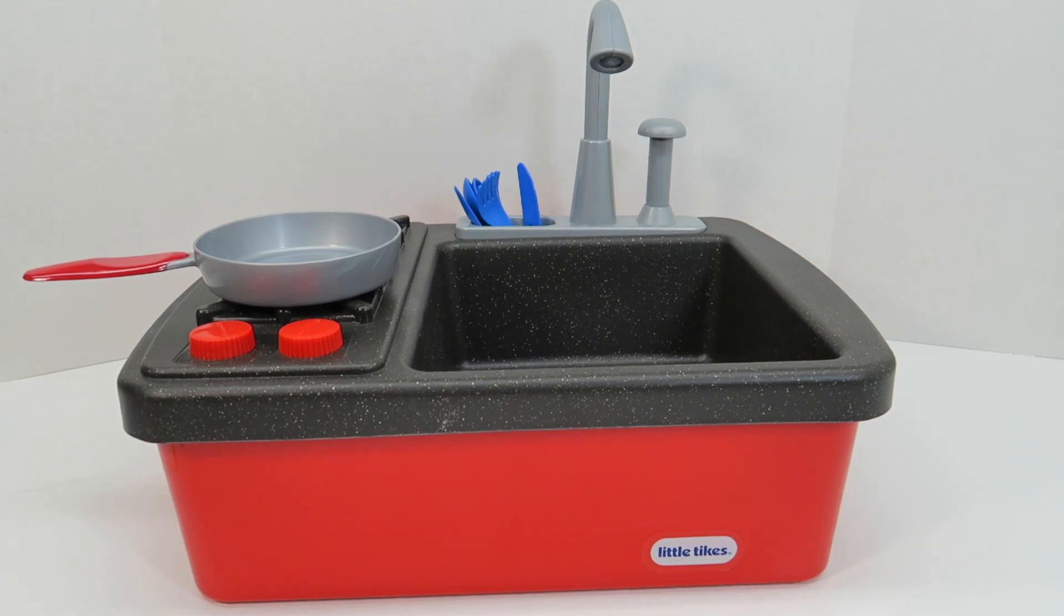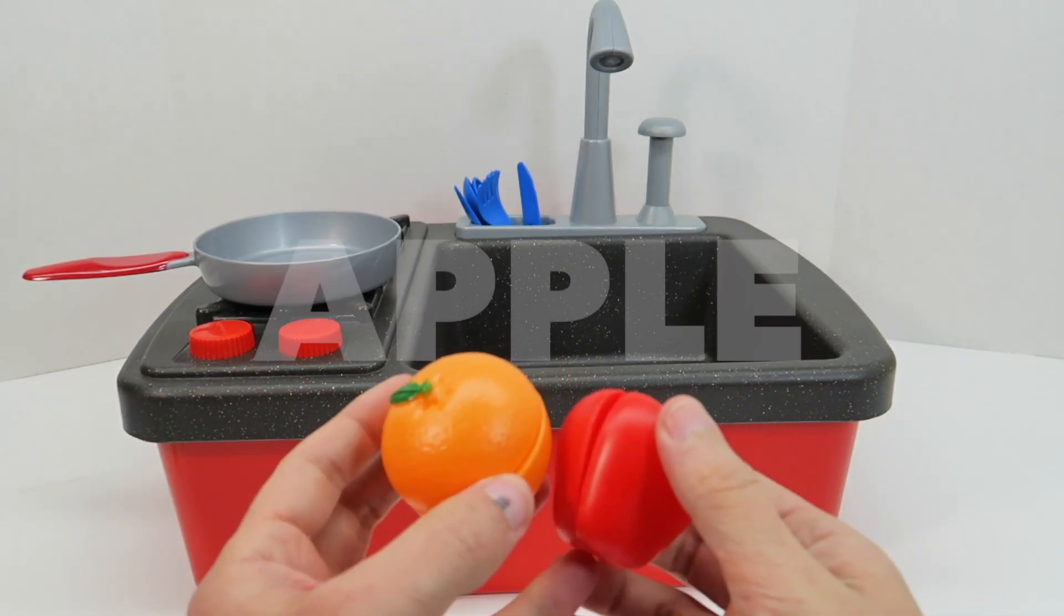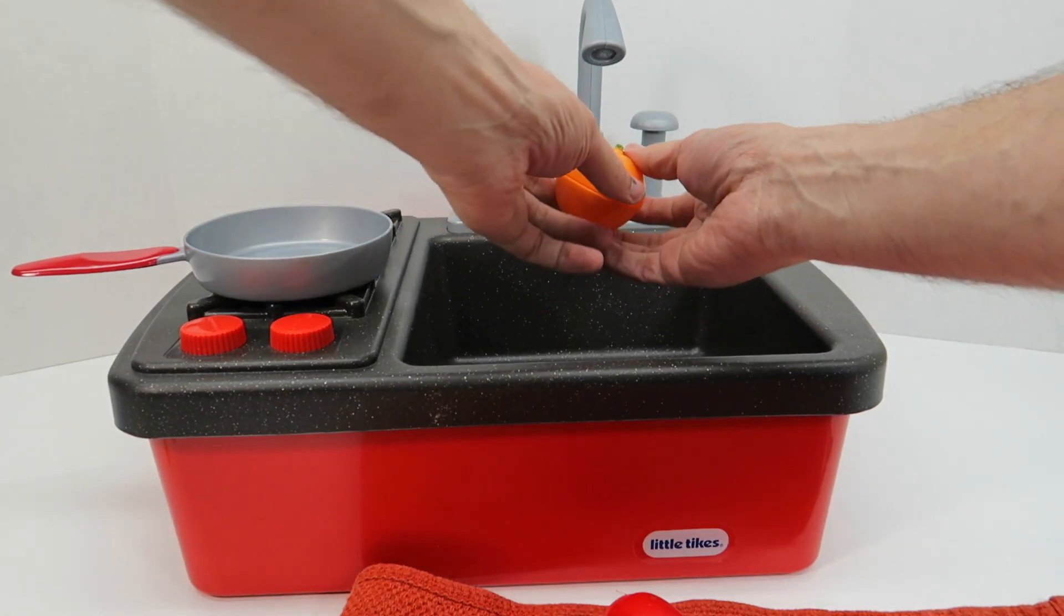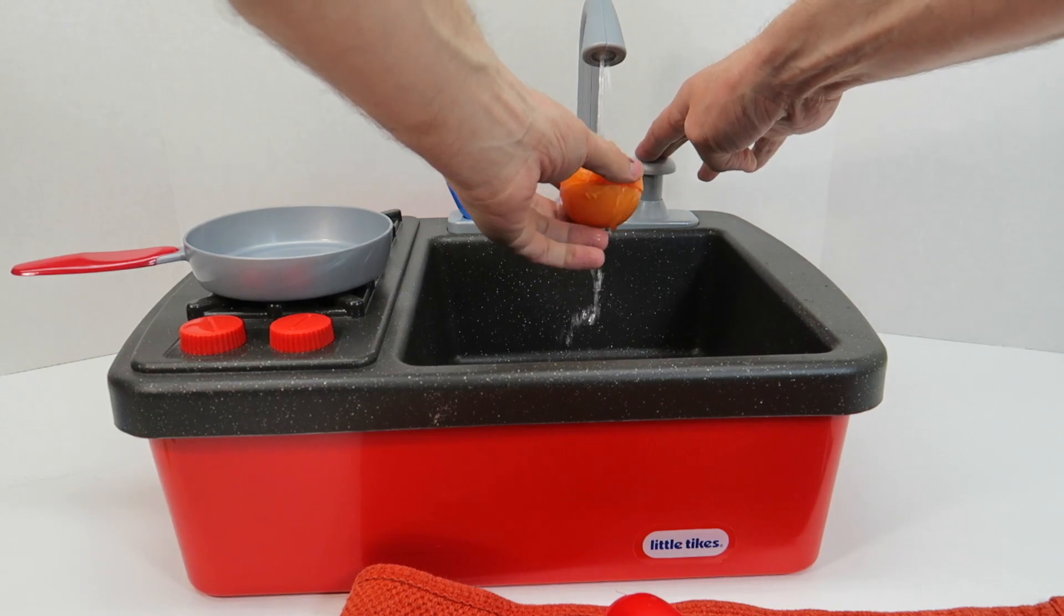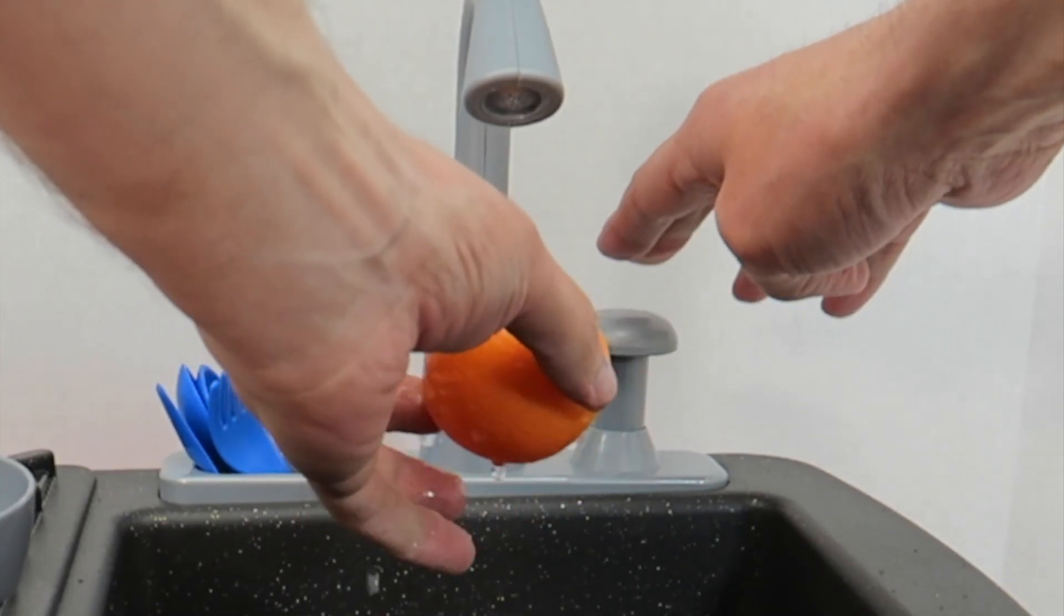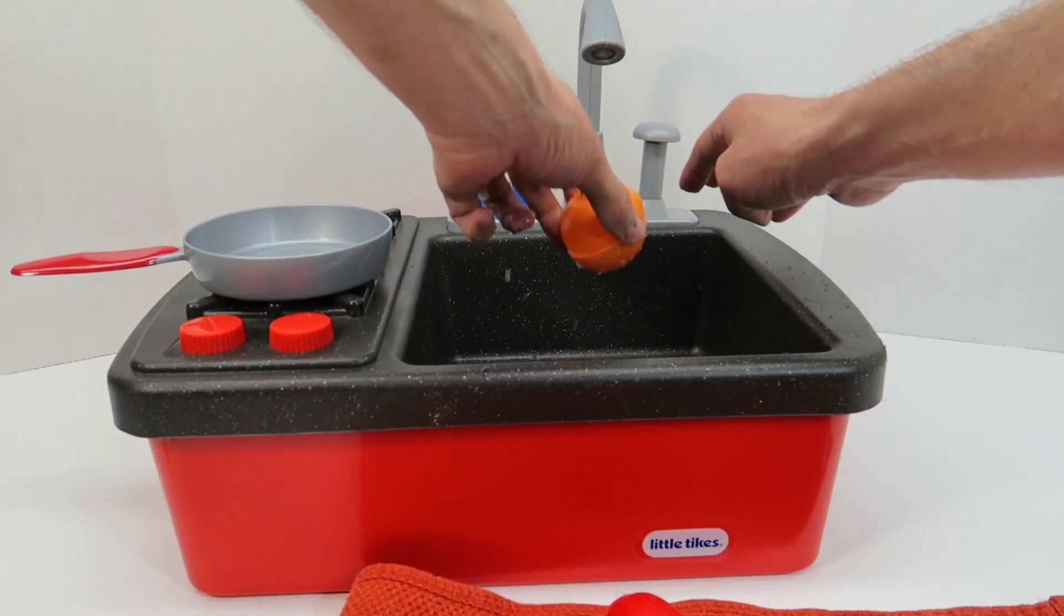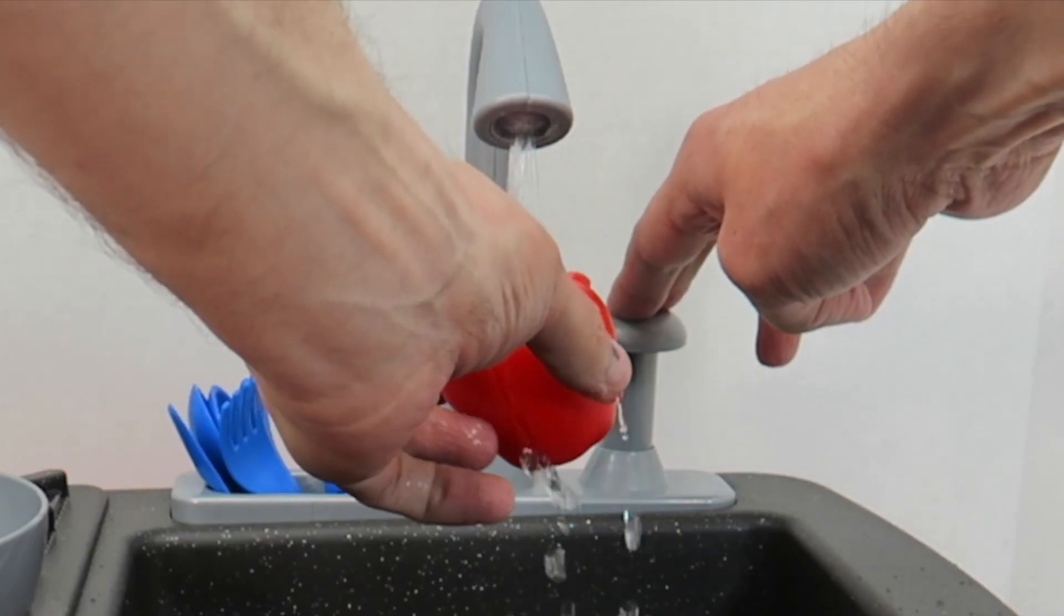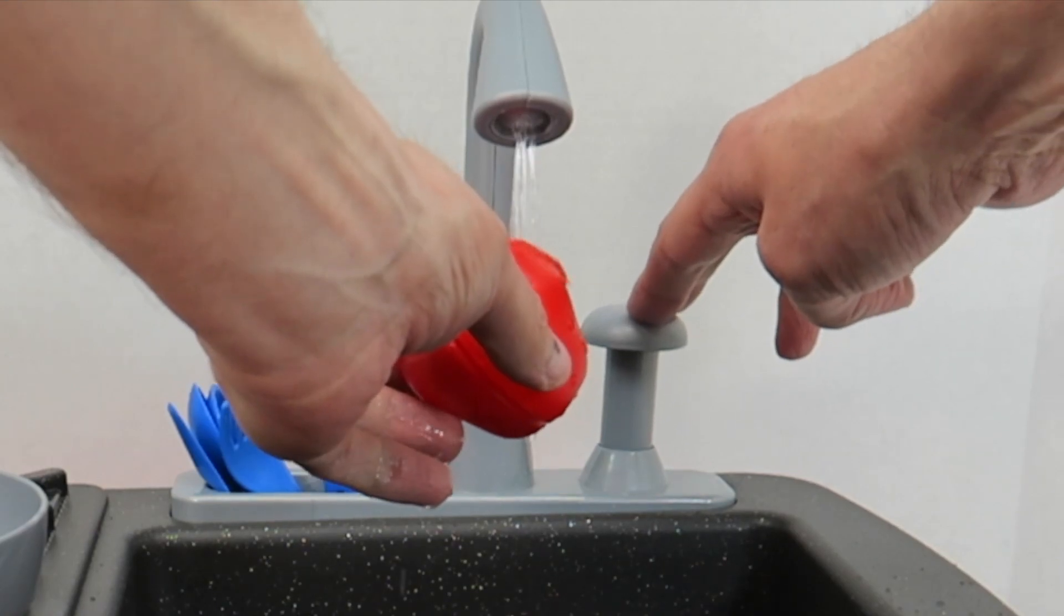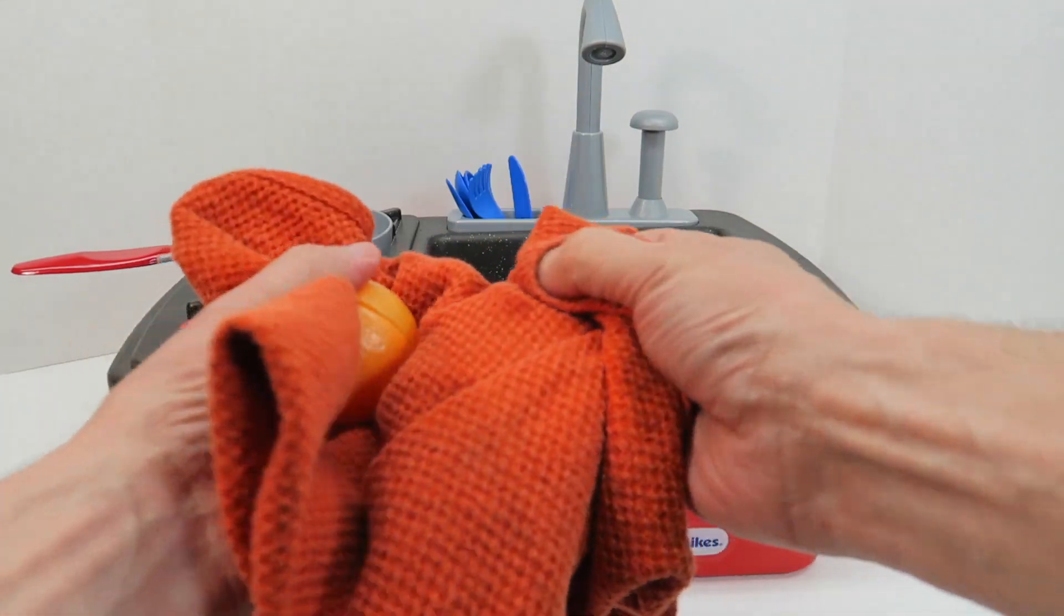Okay, first thing we're going to do is wash all of our produce. So let's wash our orange and our tomato. Let's dry them off in our towel.